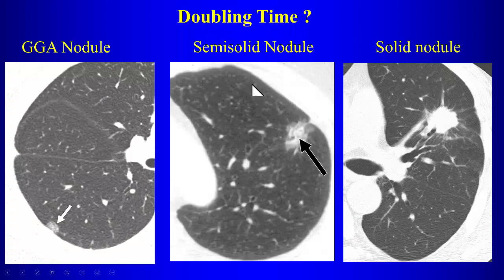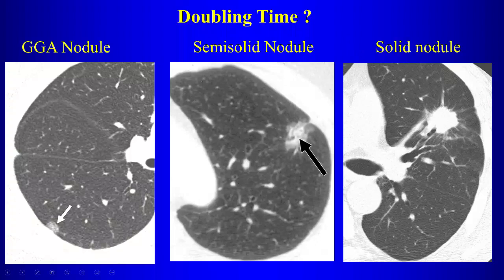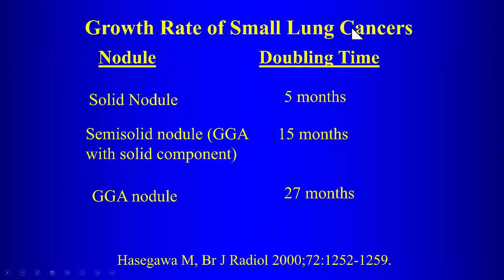There are three nodule types: pure ground glass, semi-solid (mixed ground glass and solid components), and purely solid. Ground glass means opacity through which you can still see the underlying lung architecture — blood vessels visible through the lesion. Assuming these are all malignant, the ground glass lesion would have the longest doubling time and the purely solid lesion would have the shortest doubling time.